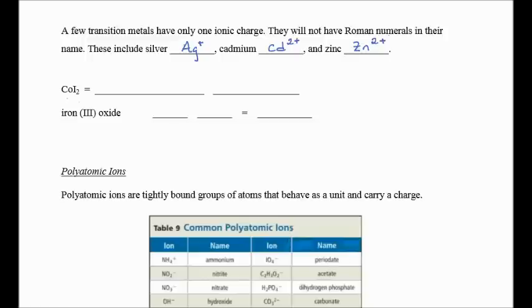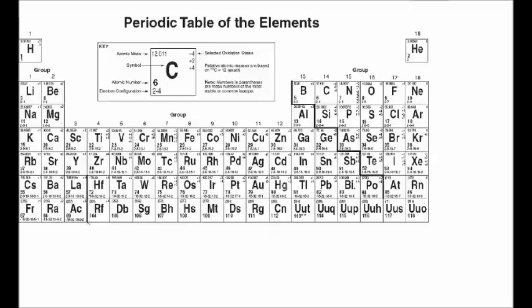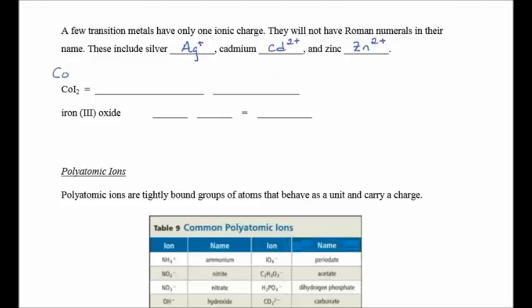So if we're going to name this CoI2, we look up cobalt in the periodic table. It has more than one positive charge, so we have to state which positive charge the cobalt is. Iodine, again, for the non-metals we're going to use the top number. It has a charge of minus 1. Cobalt can be plus 2 or plus 3. So let's use that information to write the name. Since cobalt is plus 2 and iodine is minus 1, the name is cobalt(II) iodide.